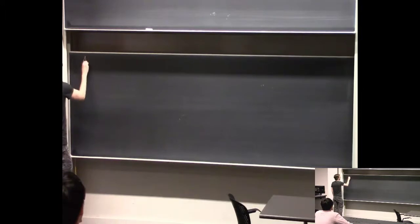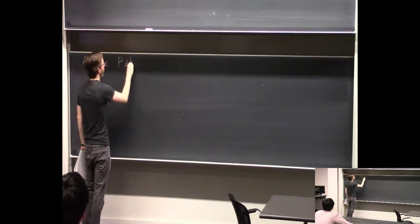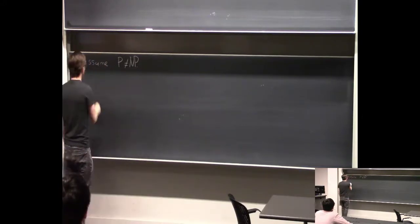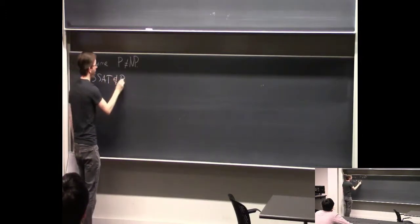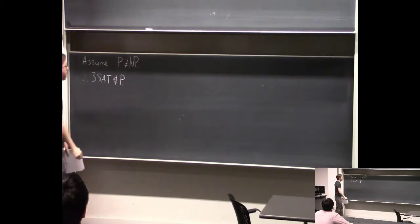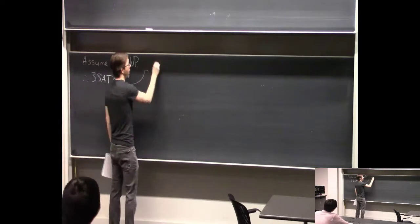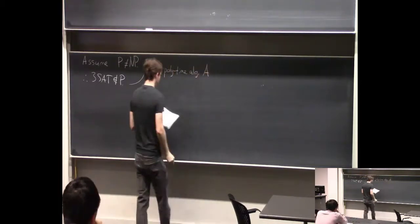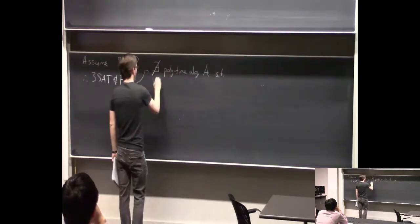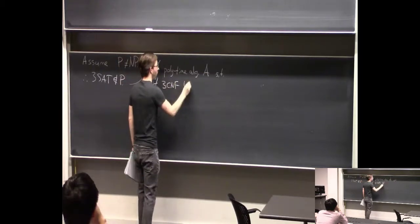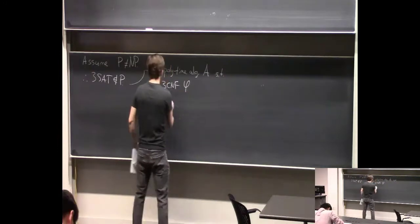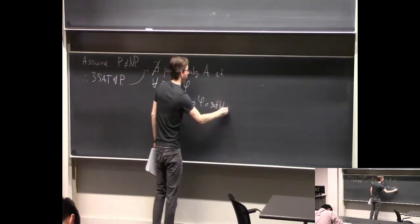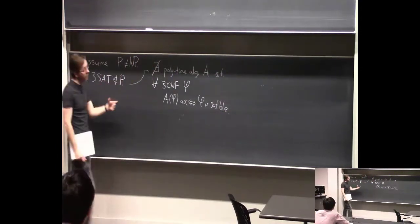So let's explore that issue a little bit. Let us assume, as I usually do, that P does not equal NP — we'll assume this for the rest of the lecture. Therefore, 3SAT is not in P. What does that mean? It means there does not exist a poly-time algorithm with the following property: for all 3CNF formulas φ, A(φ) accepts if and only if φ is satisfiable. There's just no polynomial time algorithm that gets the correct answer on every input φ.